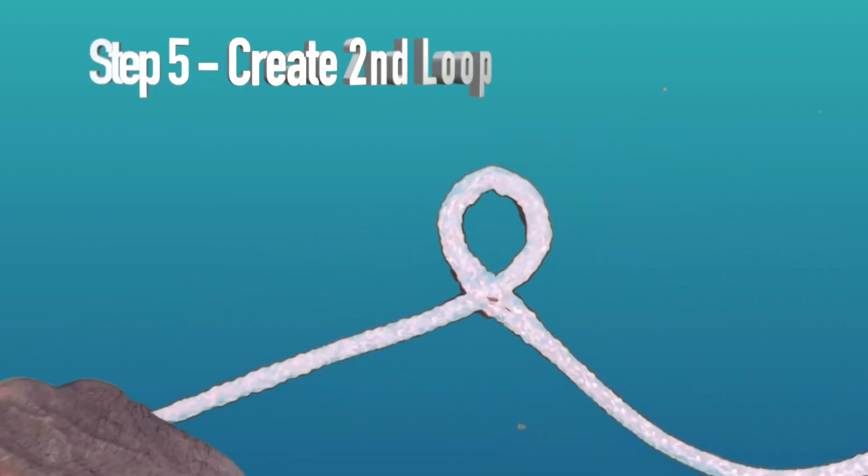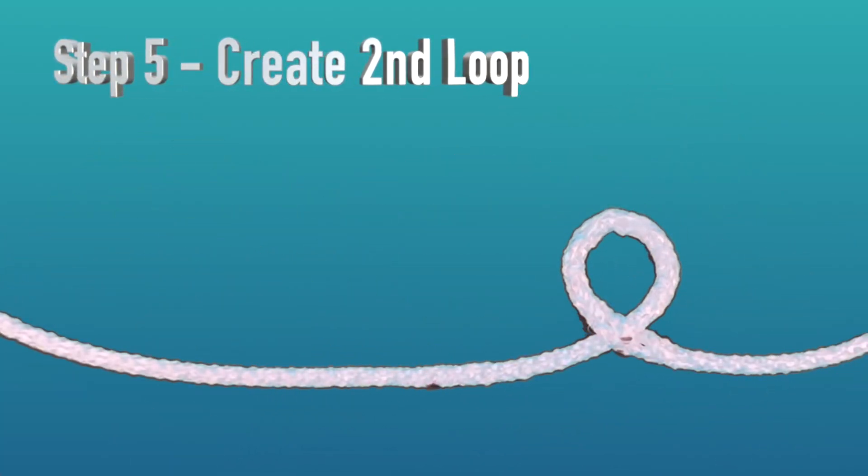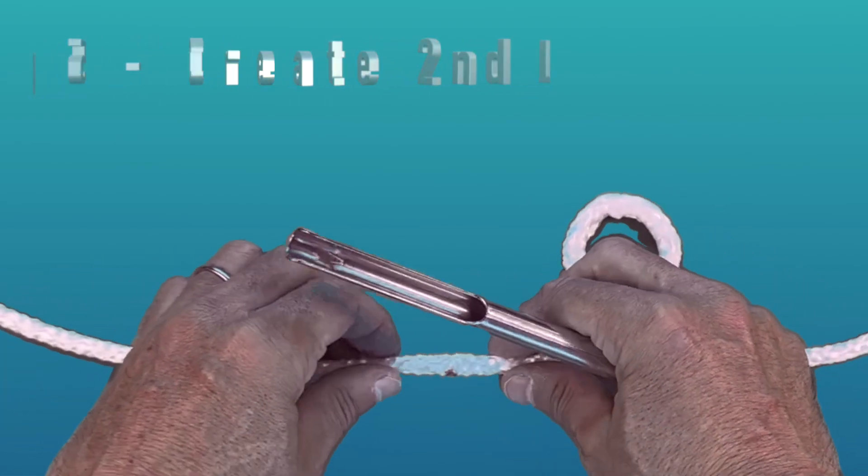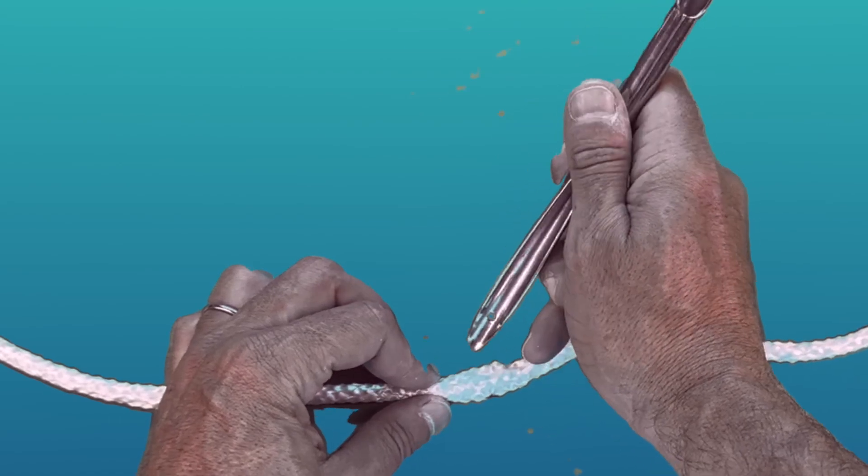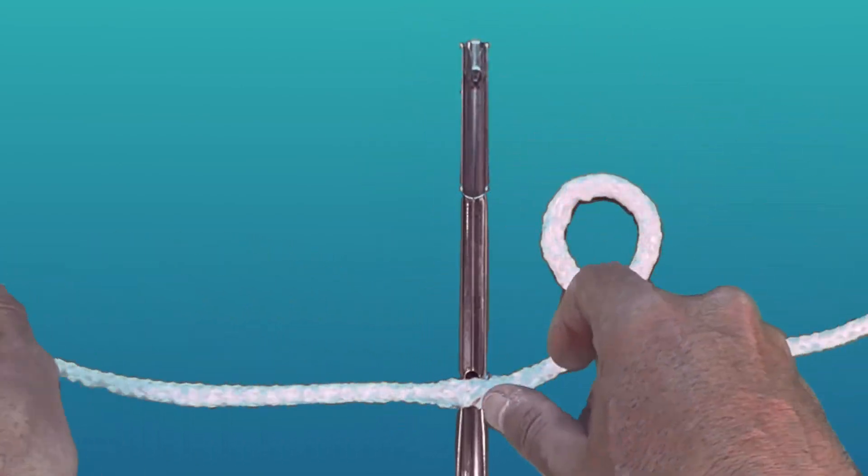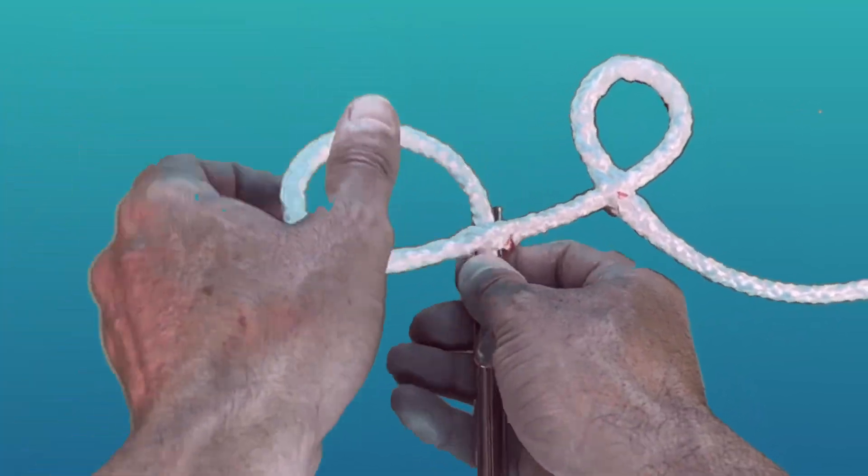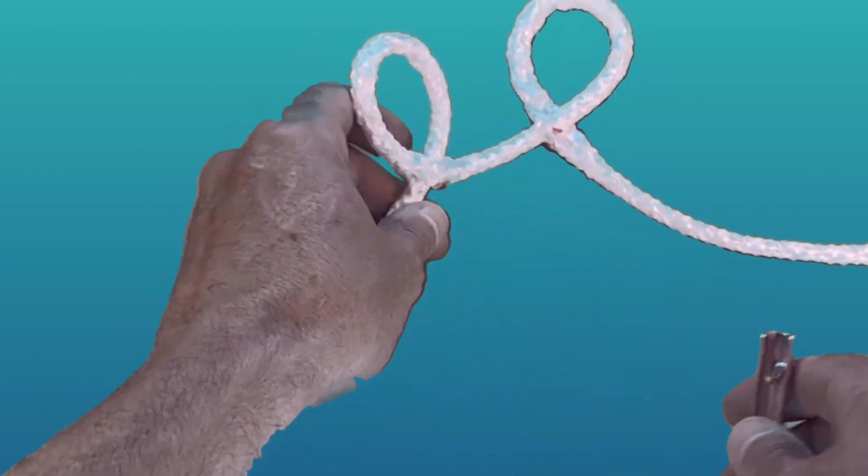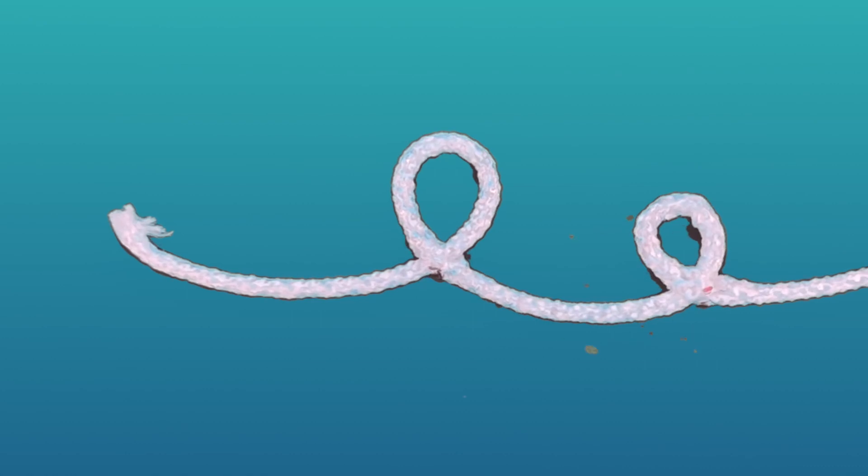For step number five, it's a repeat of step number four, this time at the second mark that you created. Once again, loosen it up, slide the fid through. And what is key at this step is to make sure that you keep the Dyneema core flat so that the two loops that you've created sit nice and neatly.